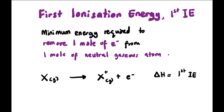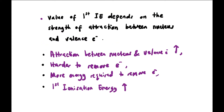So let's start with first ionization energy, or first IE. It is the minimum energy required to remove one mole of electrons from one mole of neutral gaseous atoms. So if we have X in gaseous form, we remove one electron and it becomes X+ ion in gaseous form. The energy required to remove this electron is called the first ionization energy. The value of first IE depends on the strength of attraction between the nucleus and valence electron. The stronger the attraction, the harder it is to remove the electron, so more energy is required and first IE will be higher.